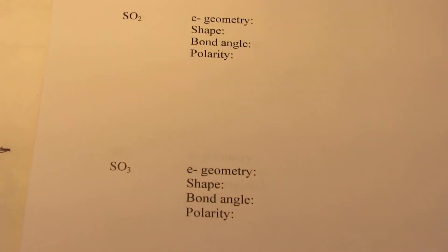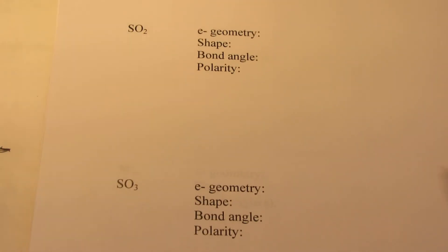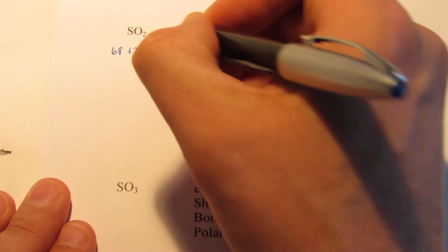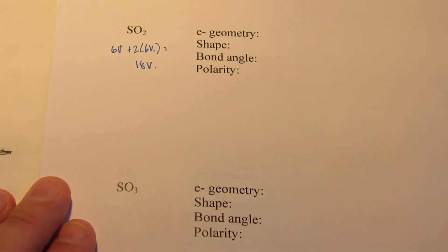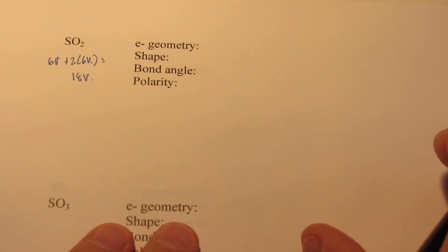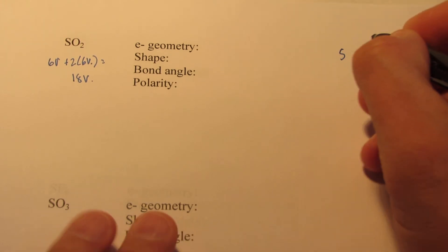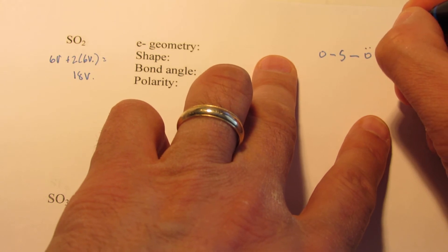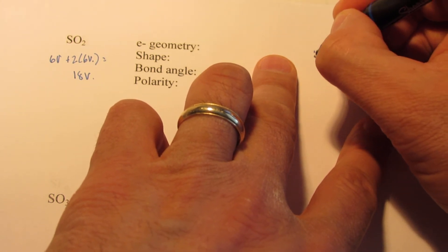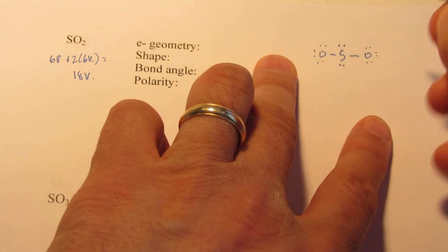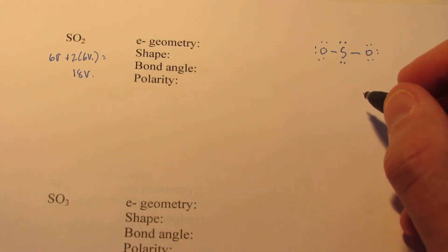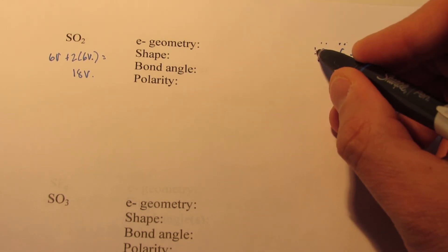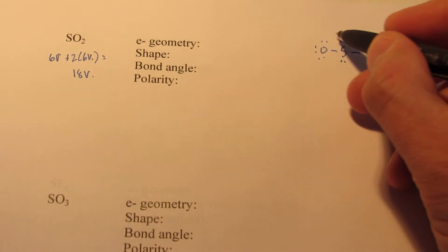All right, moving right along. SO₂, sulfur dioxide. 6 valence for the sulfur, 6 valence for each oxygen. I have 18 valence electrons here to deal with. Now I'm going to put sulfur in the center here. We'll try a single bond between the sulfur and each oxygen. We'll give each oxygen a full octet, and let's not forget to give our sulfur a full octet. Let's check to make sure we've used the proper number: 2, 4, 6, 8, 10, 12, 14, 16, 18, 20. Hmm, we're only allowed 18. What are we going to do?